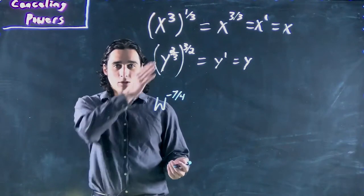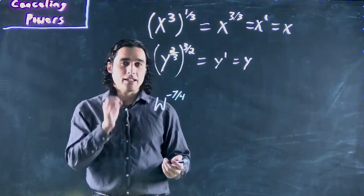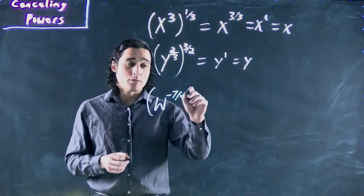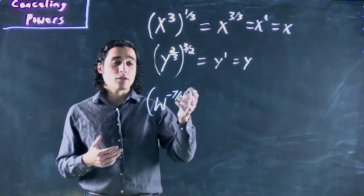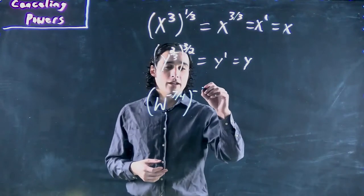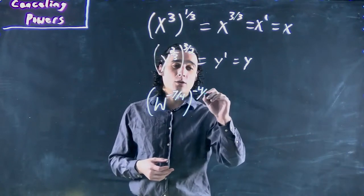The exact same thing we've been doing here. Multiply by the inverse, which means the negative sticks around. The negative will cancel with the negative.